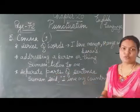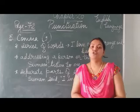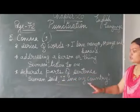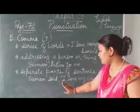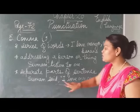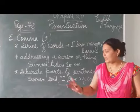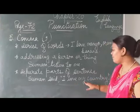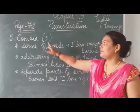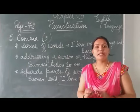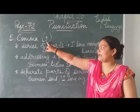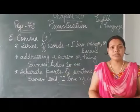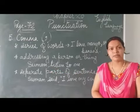Next, separating parts of a sentence. Whenever we have to separate the parts of a sentence, at that time also we use comma. For example, 'Having done his work, I love my country.' Here the parts of the sentence are separated — one part and then 'I love my country' is the second part, separated by a comma. So whenever we are separating parts of the sentence, we use comma. Comma is used for a brief or small pause: for separating a series of words, addressing a person or thing, and separating parts of the sentence.